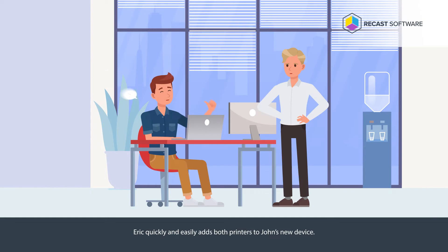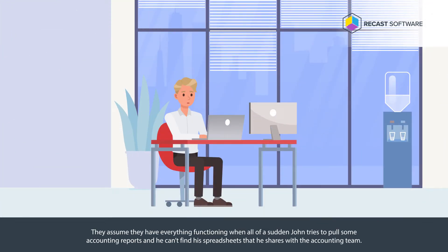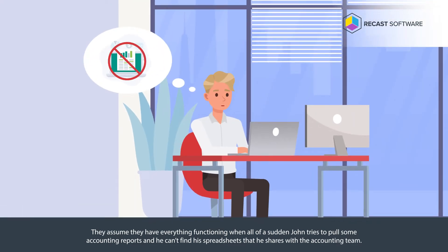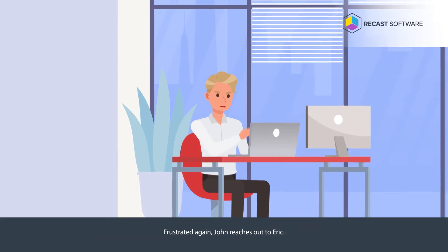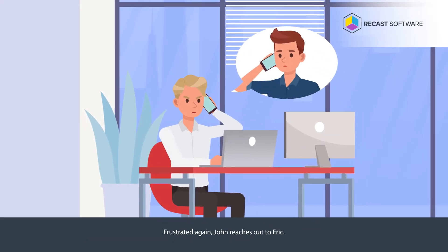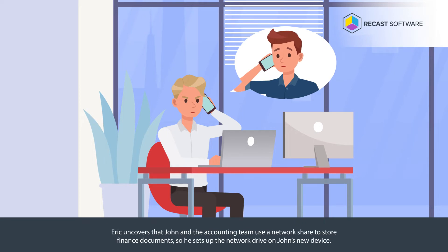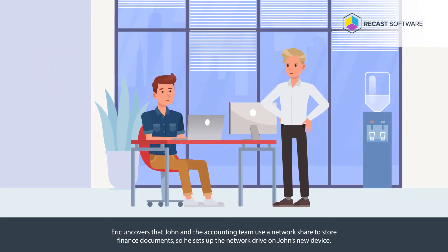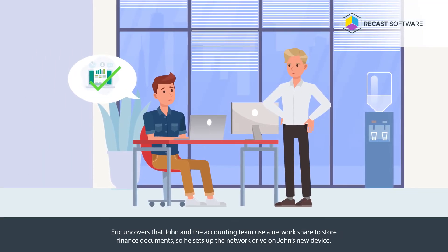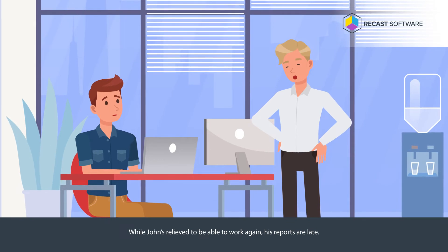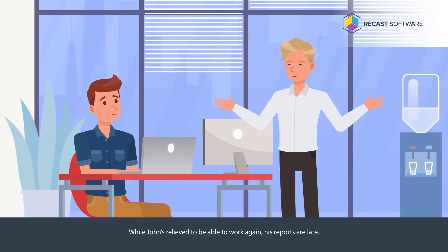Eric quickly and easily adds both printers to John's new device. They assume they have everything functioning when, all of a sudden, John tries to pull some accounting reports and he can't find his spreadsheets that he shares with the accounting team. Frustrated again, John reaches out to Eric. Eric uncovers that John and the accounting team use a network share to store finance documents, so he sets up the network drive on John's new device. While John's relieved to be able to work again, his reports are late.